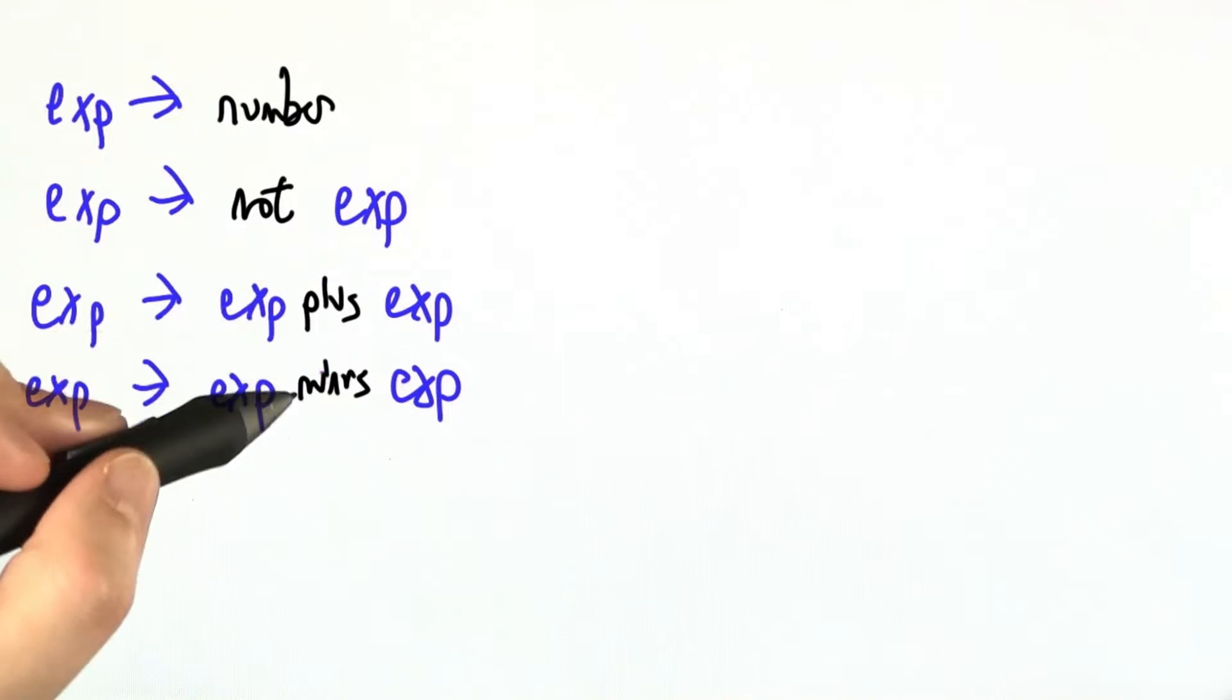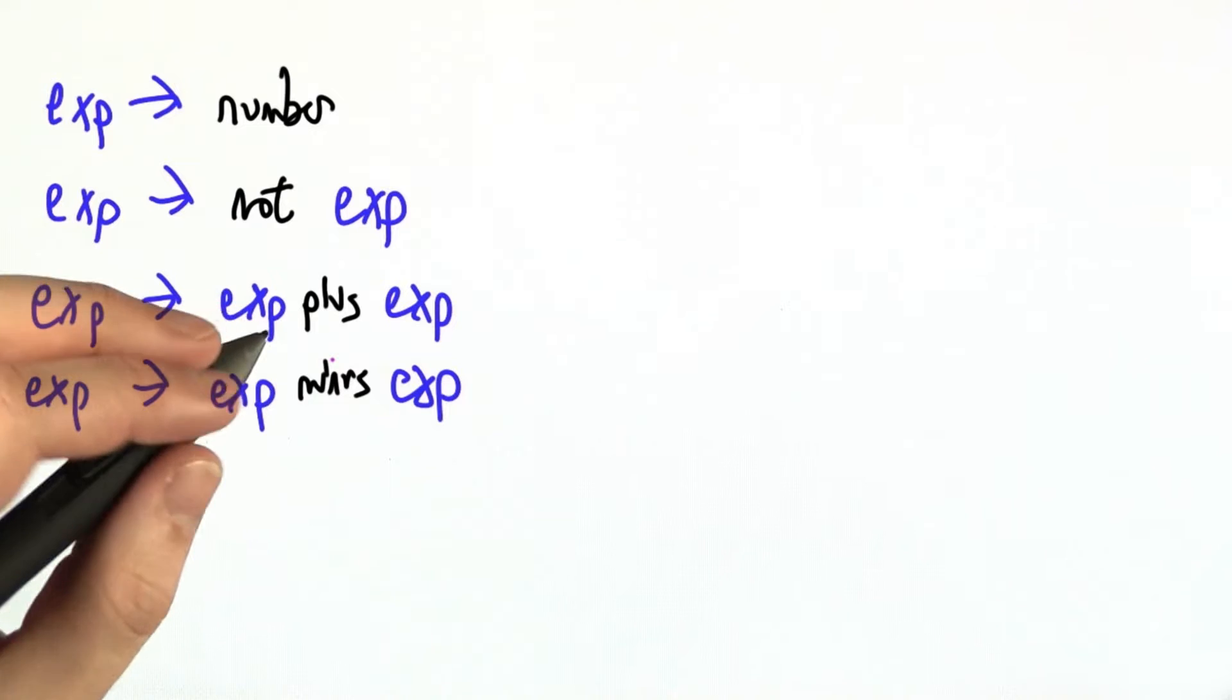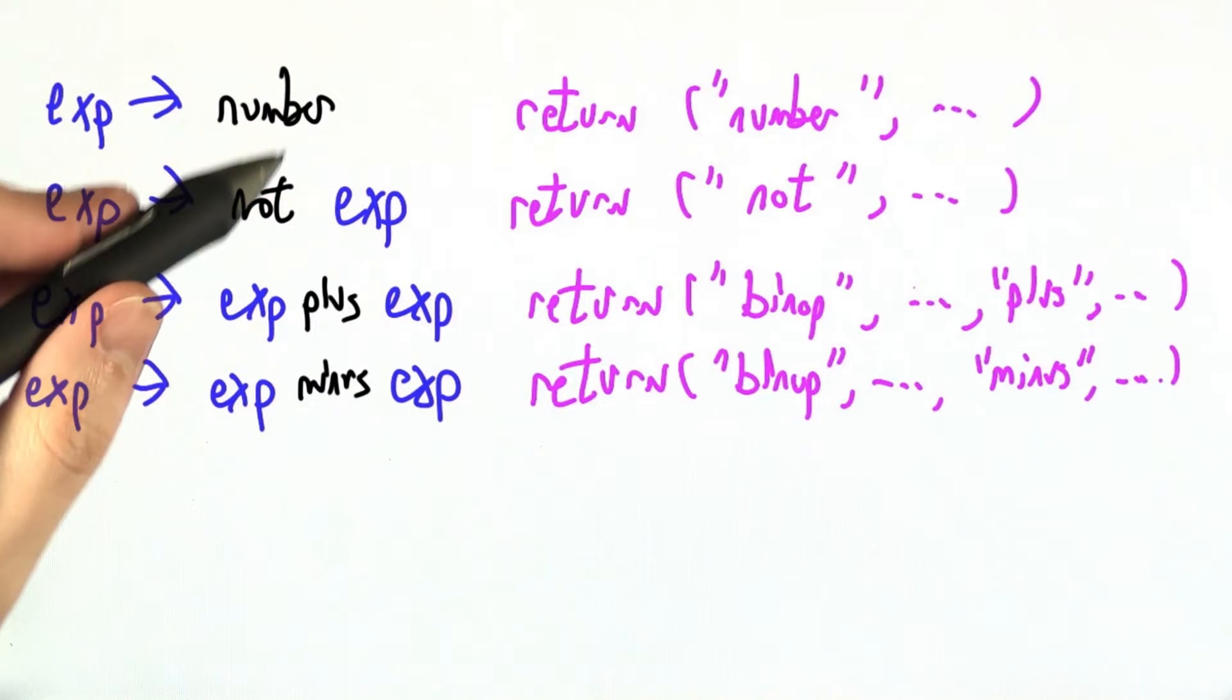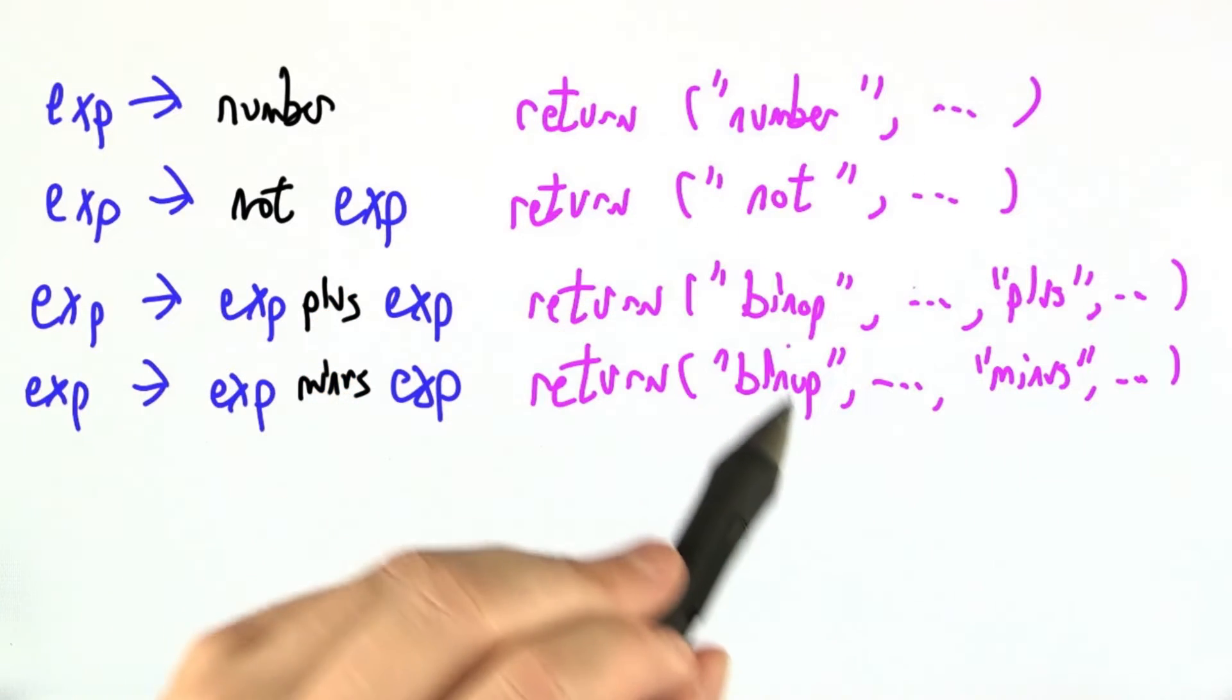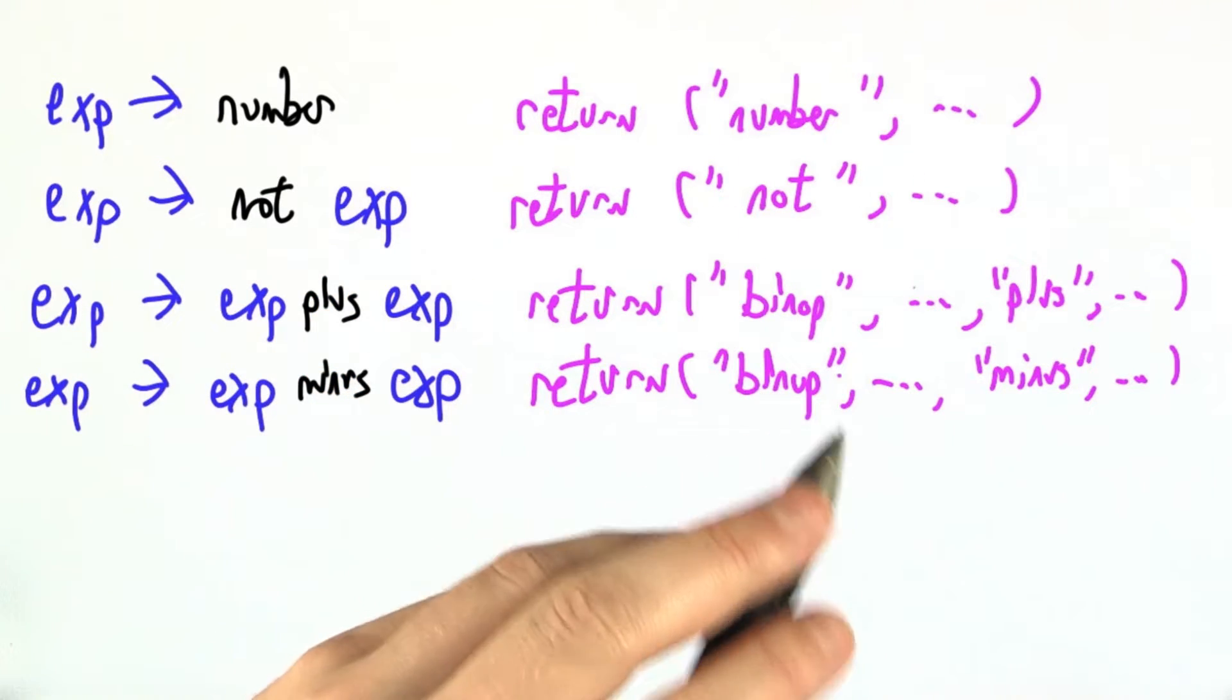Now this time I've written the tokens as plus and minus and not instead of the symbols. That's our choice. We can do it either way we want. And the particular format I'm going to pick for our abstract syntax tree is nested tuples or nested lists in Python.